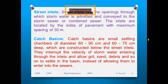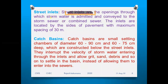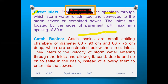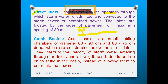The next accessory is street inlets. These are openings through which storm water is admitted and conveyed to the storm water or combined sewer pipeline. At road corners you can find small junctions where rainwater or storm water flows in and goes to the sewer pipeline. The inlets are located by the sides of the pavement with a maximum spacing of 30 meters.